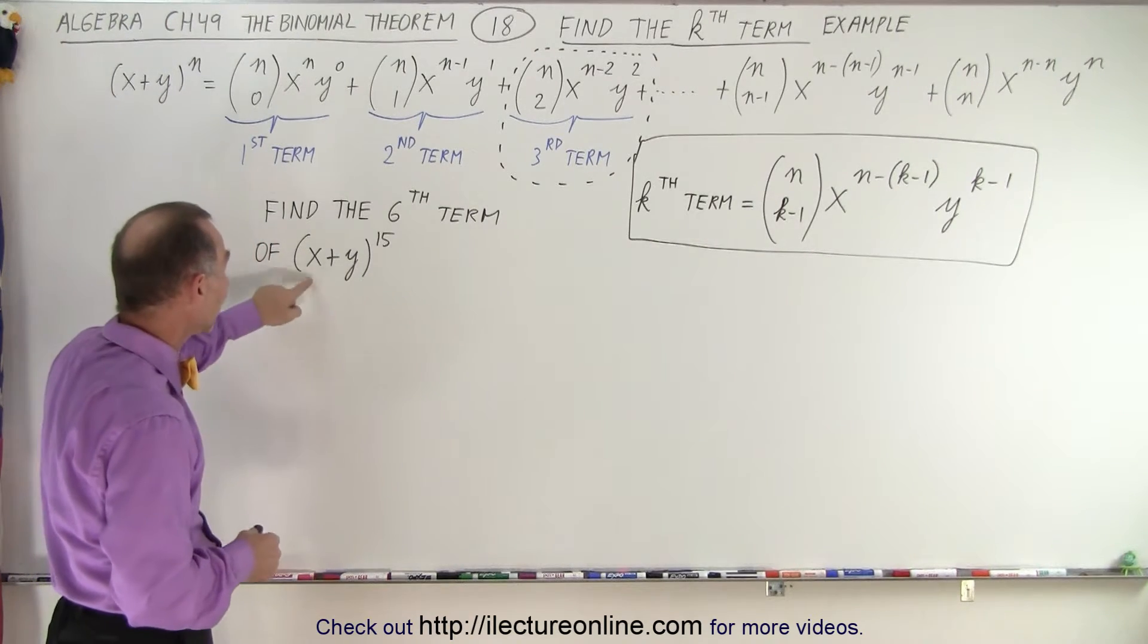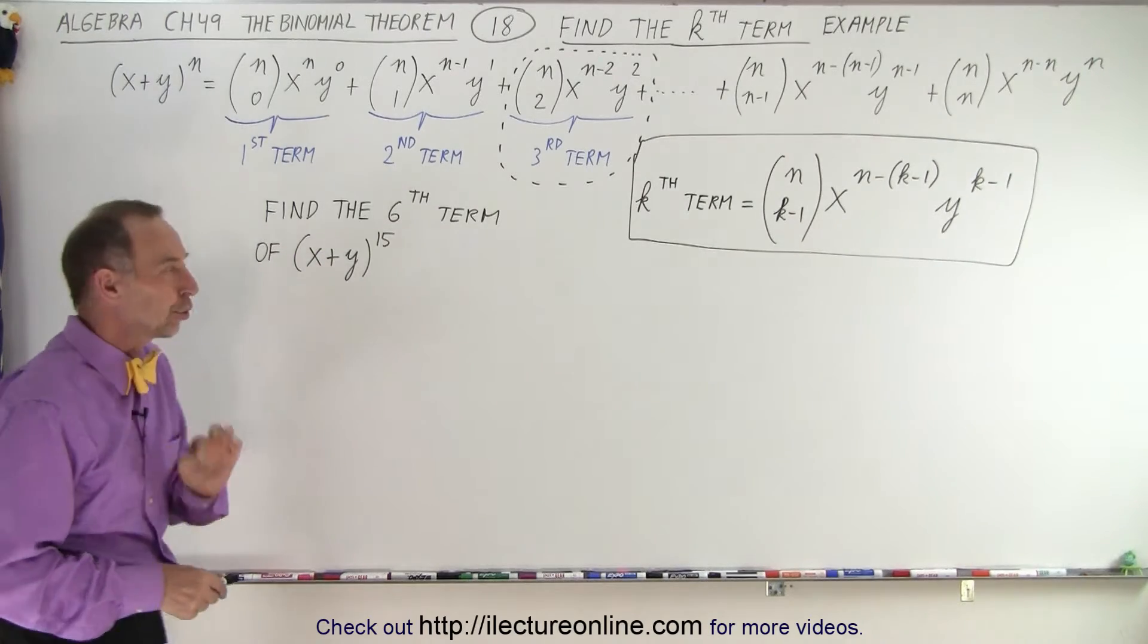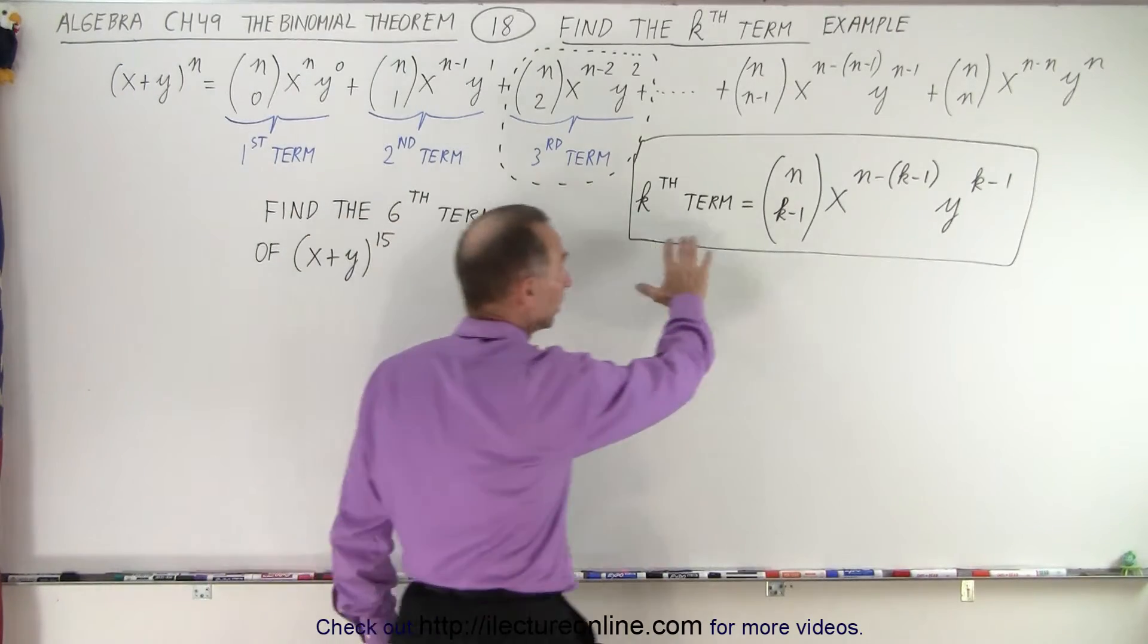So in this case, we're going to take x plus y to the 15th power, and we're going to determine the sixth term, both the numerical coefficient and the exponents. And here we have the general formula.